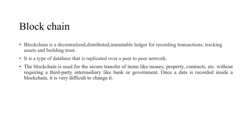The replicated copies of the blockchain blocks are stored in the form of a chain among all the nodes connected in the network — it's a chain of blocks, so we use the term blockchain. Blockchain is a type of database replicated over a peer-to-peer network, and the agreement between the blockchain network participants over the state of the database is achieved through a consensus mechanism. Blockchain is used for secure transfer of items like money, property, or contracts.